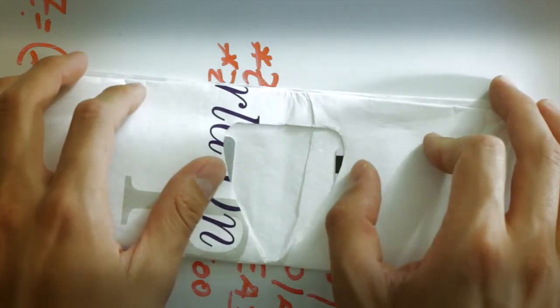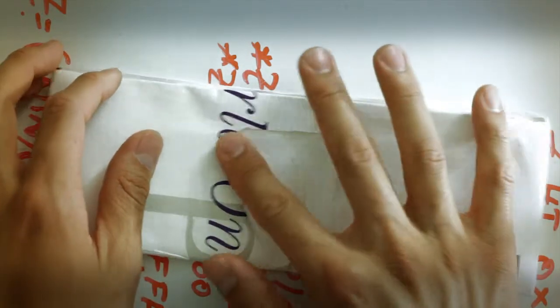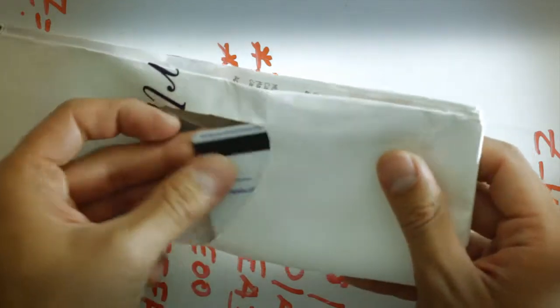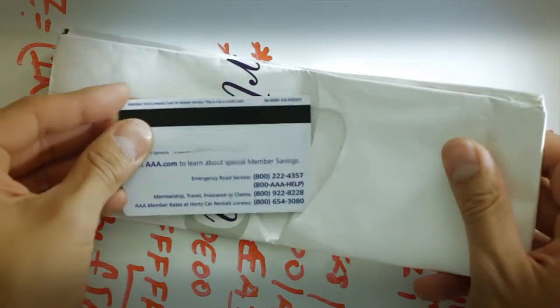The inside of the wallet has two credit card compartments, one on the left and one on the right. You can slide out your credit cards and put them in just as easily.